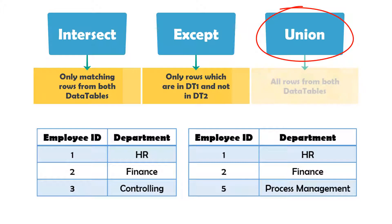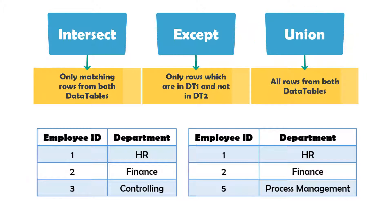Union — with this function you get all rows from both tables. That is, the result is a table that contains all the rows from table 1 and table 2. The same rows are only included once.